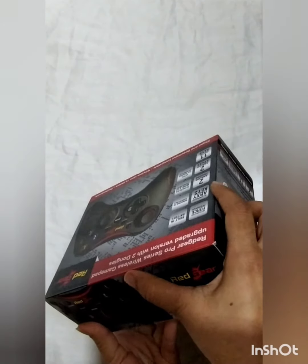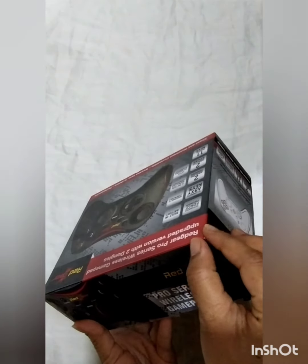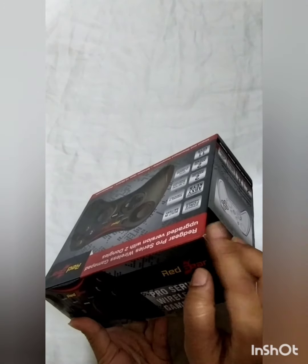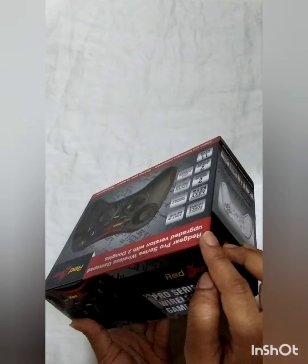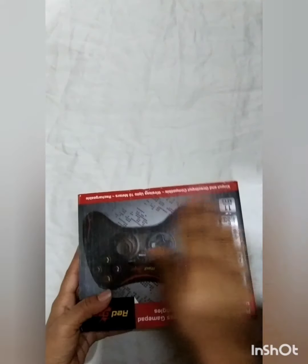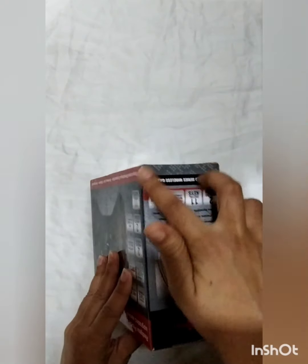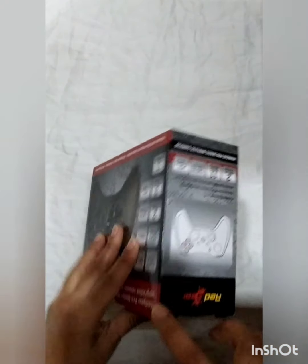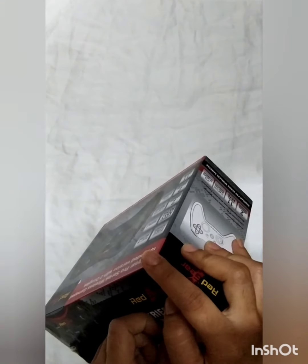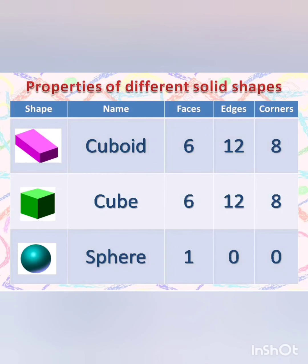Here also the two faces meet and this forms an edge. The places where two edges meet form the corner of the box. So to repeat: the face, the place where two faces meet forms the edge, and the place where two edges meet forms the corner. Now let's learn the properties of different solid shapes.